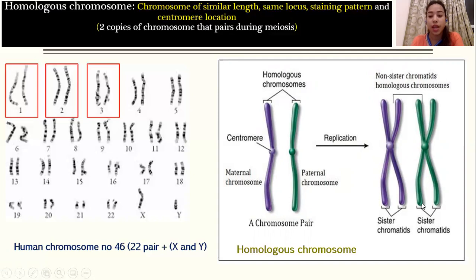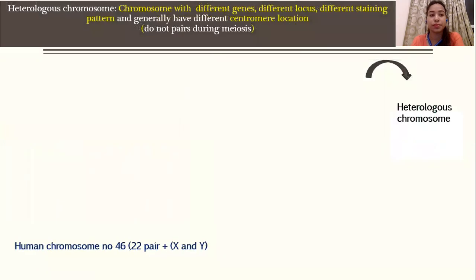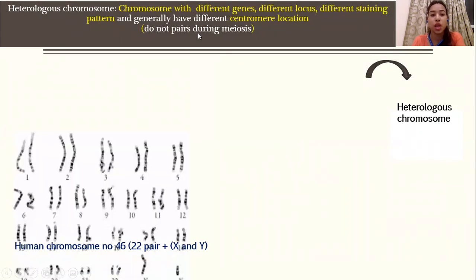Now moving to heterologous chromosomes. What is a heterologous chromosome, and what features does it have? In heterologous chromosomes, the chromosomes have different genes, different loci, different staining patterns, and generally different centromere locations. One more important thing: heterologous chromosomes do not pair during meiosis.